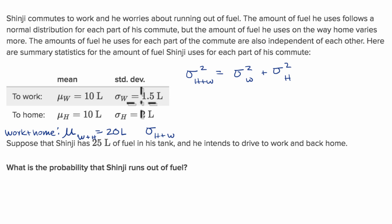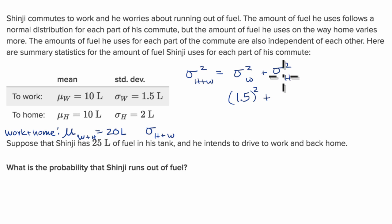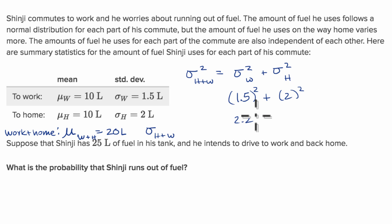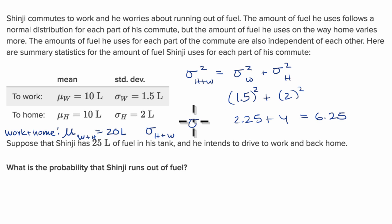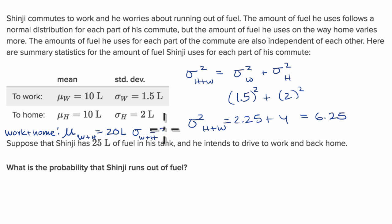What's the variance of going to work? Well, 1.5 squared. And what's the variance coming home? That's going to be 2 squared. So this is 2.25 plus 4, which is equal to 6.25. So the variance on the round trip is equal to 6.25. Taking the square root of that gives a standard deviation of 2.5.